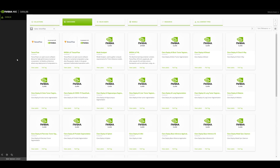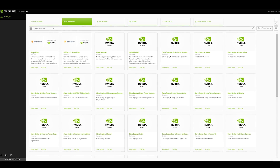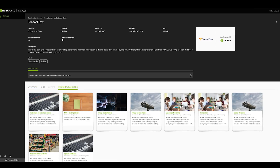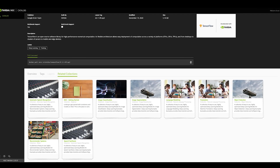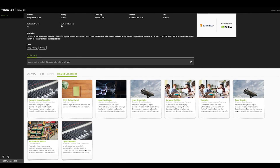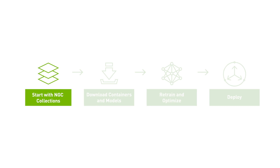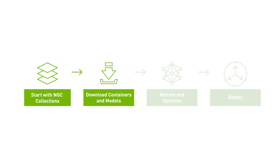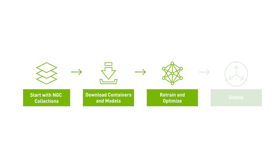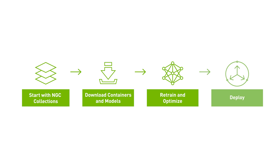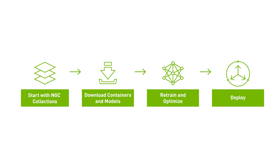For every asset on NGC, we also show you related collections so you can discover new content, models, and software to make your workflow easier. To get started, you just have to find the collection for your use case, download a container and model, retrain and optimise the weights with your data, and then deploy the app as an API so you can use it wherever you need.